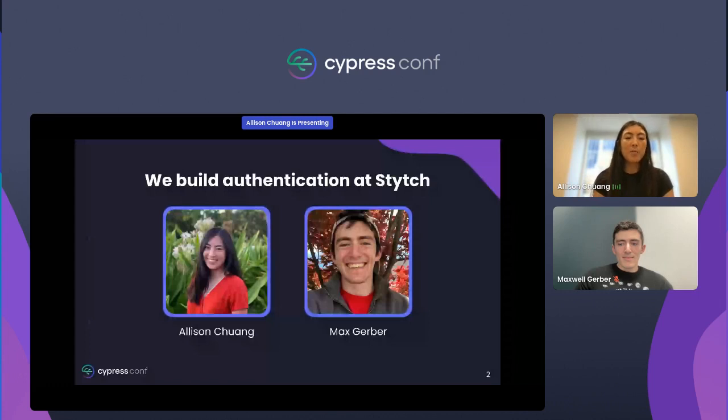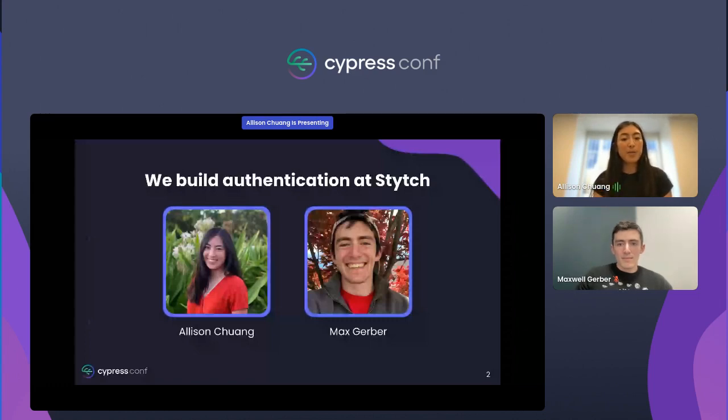To start, a little bit about us and why we care about this. Max and I are both software engineers at Stitch, which is a company that builds authentication and fraud prevention software. We care deeply about the performance and security of our auth products, so we've invested a lot of time into making sure our auth flows work as expected, with end-to-end testing being one of the important ways that we do this. Cypress has been a super helpful tool for quickly setting up useful end-to-end testing for our authentication products.